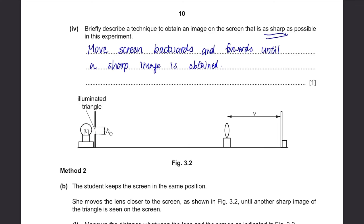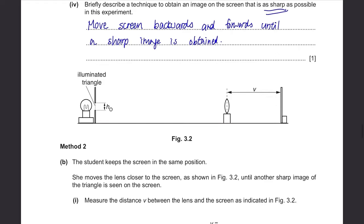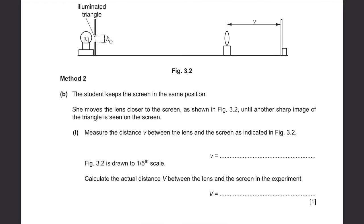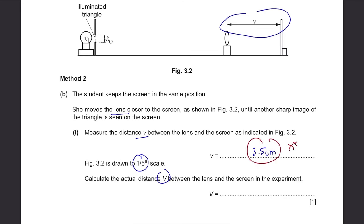Method 2: the student keeps the screen in the same position and moves the lens closer to the screen as shown in figure 3.2, until another sharp image is seen. Measure V between the lens and the screen from figure 3.2 — it should be 3.5cm. Since figure 3.2 is also drawn to one-fifth scale, calculate the actual V by multiplying by 5: V equals 17.5cm.